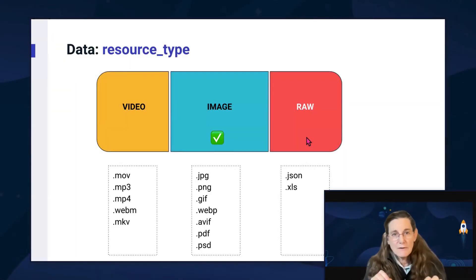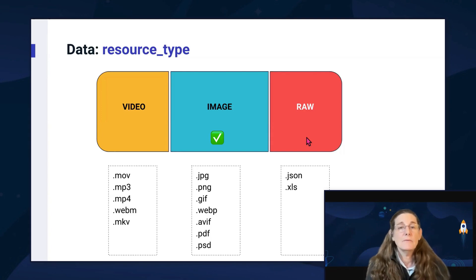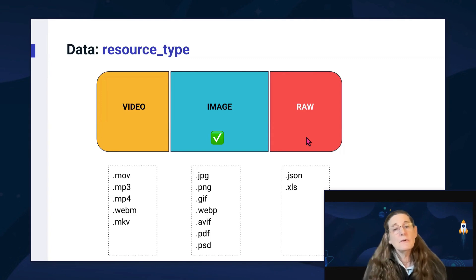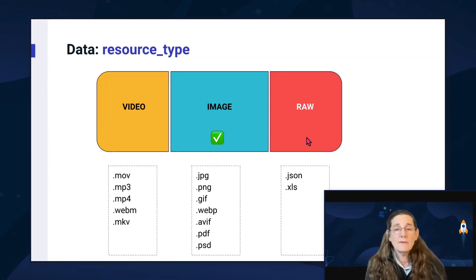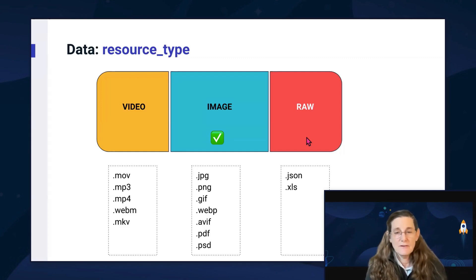Regarding resource type, I'm showing resource_type because it's a parameter in a lot of uploads. By default, Cloudinary uploads images, so if you don't specify a resource type, it will assume you're uploading an image. In this course, we'll only be uploading images mainly to save time, but you can do the same things with video and raw files. I've shown here a few file extensions for the types of files under each of these resource types.